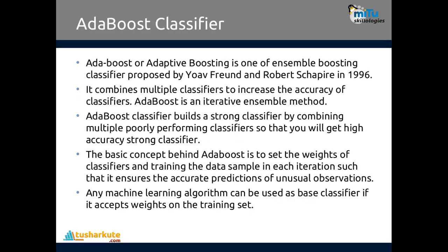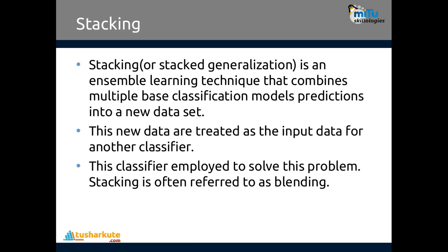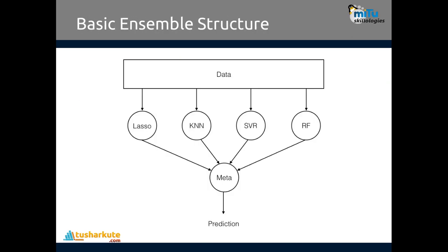Let us go to the third technique: stacking (also called stack generalization). Stacking is an ensemble learning technique that combines multiple base classification model predictions into a new dataset. This new dataset is treated as input data for another classifier to solve the problem. Stacking is also known as blending. Stacking is similar to bagging but the key difference is that bagging uses the same classifiers while stacking uses different classifiers. Classification uses majority voting and regression uses the average of all outputs.